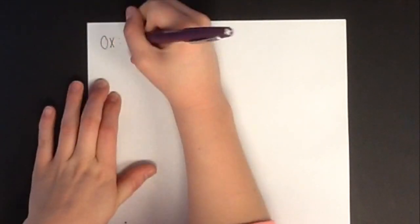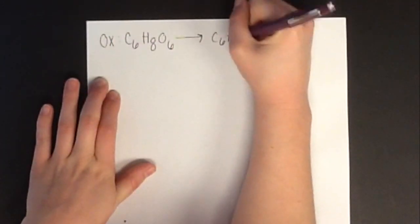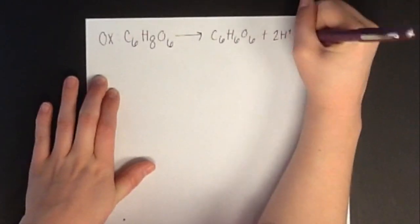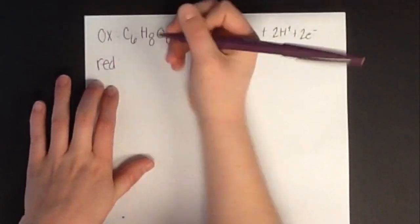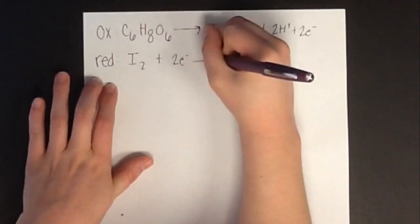In the redox reaction of ascorbic acid and iodine, ascorbic acid will lose two electrons, as shown in the equation. Since ascorbic acid is being oxidized,